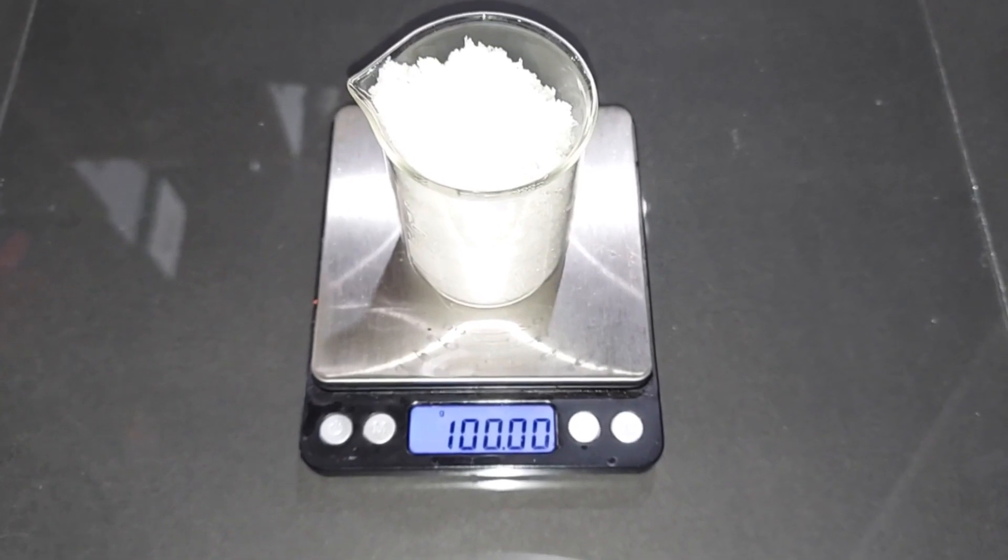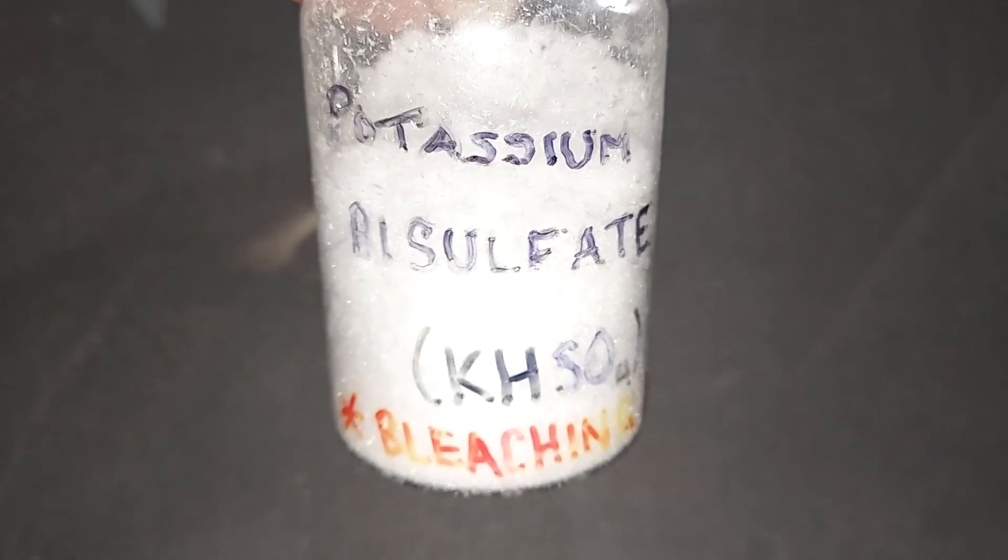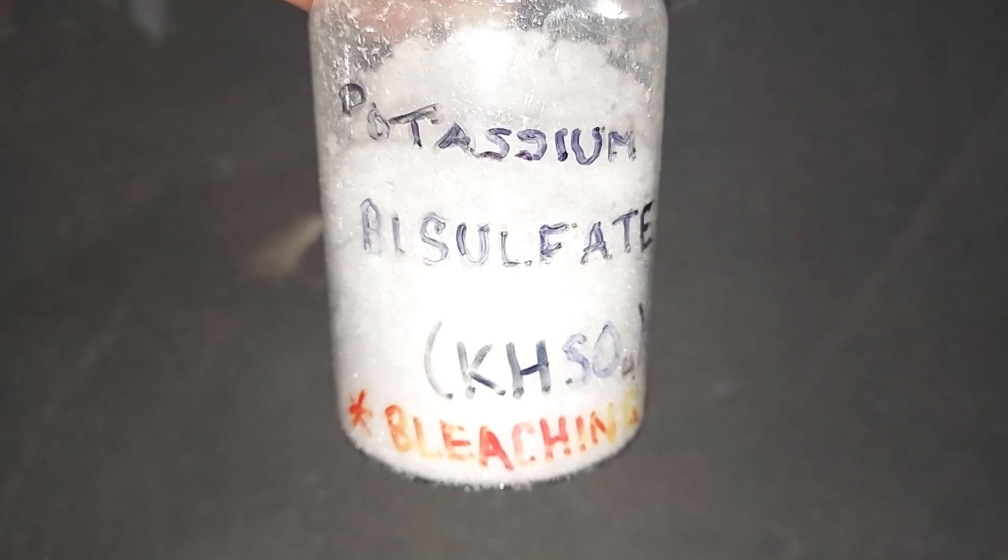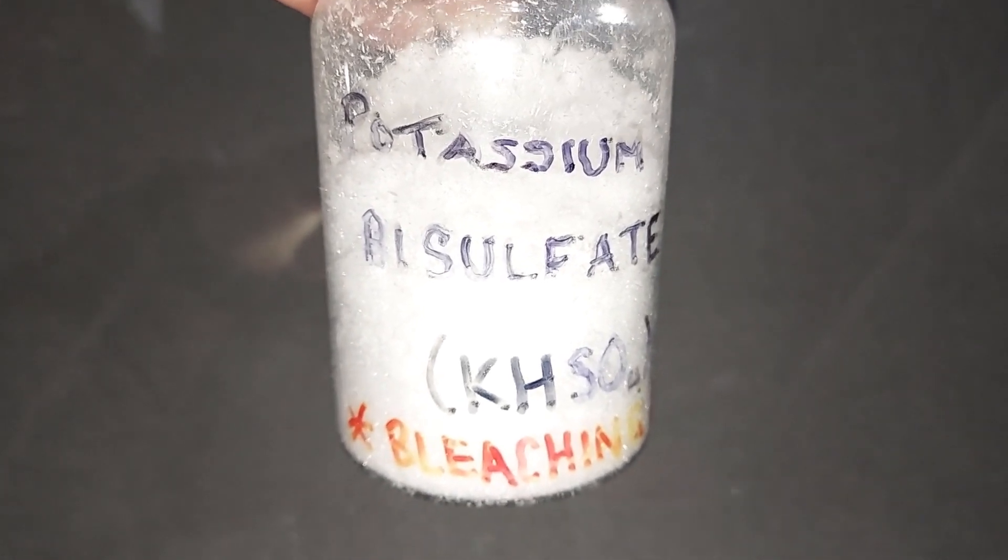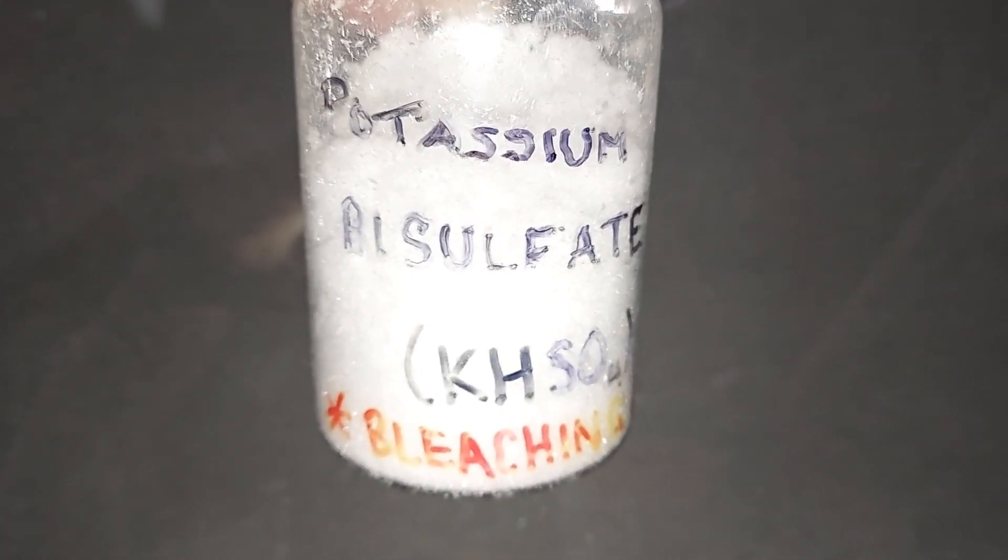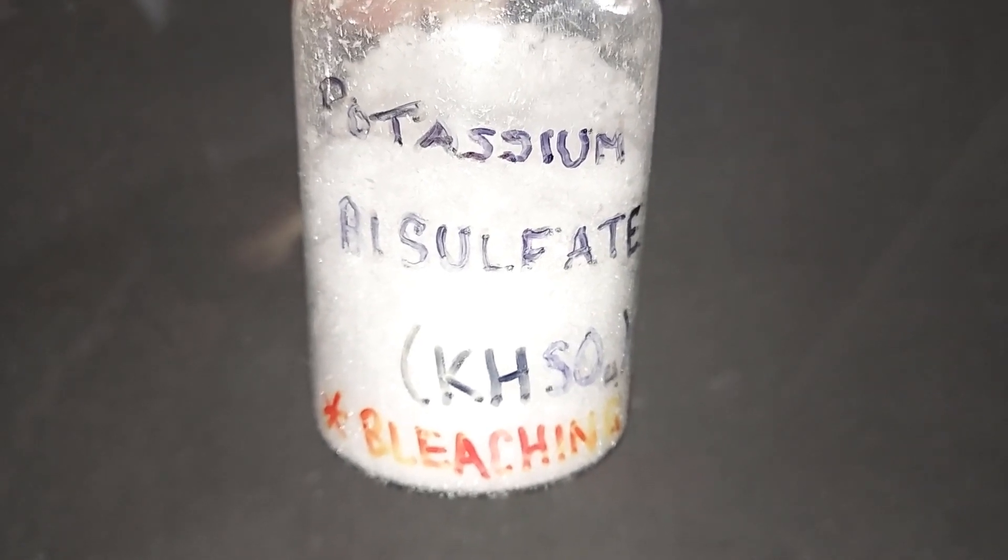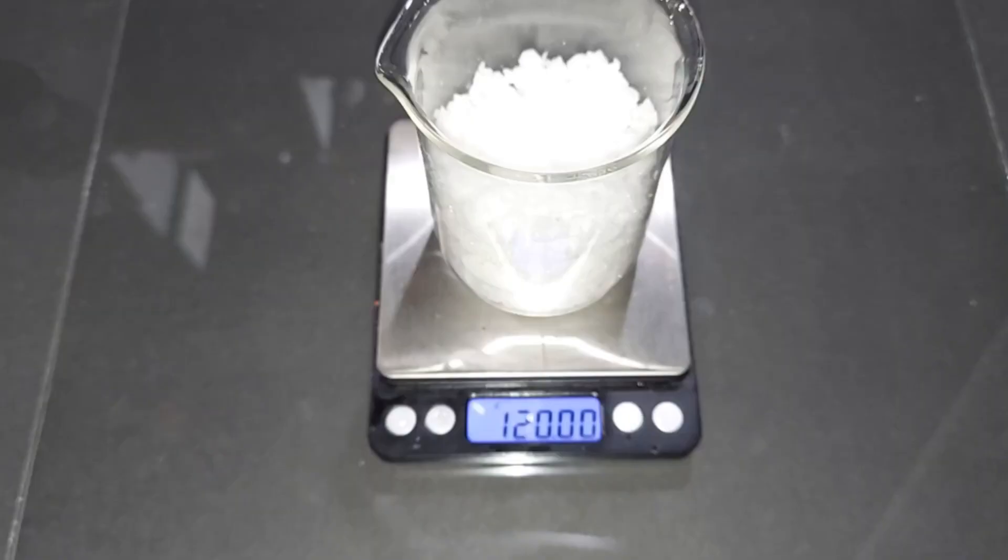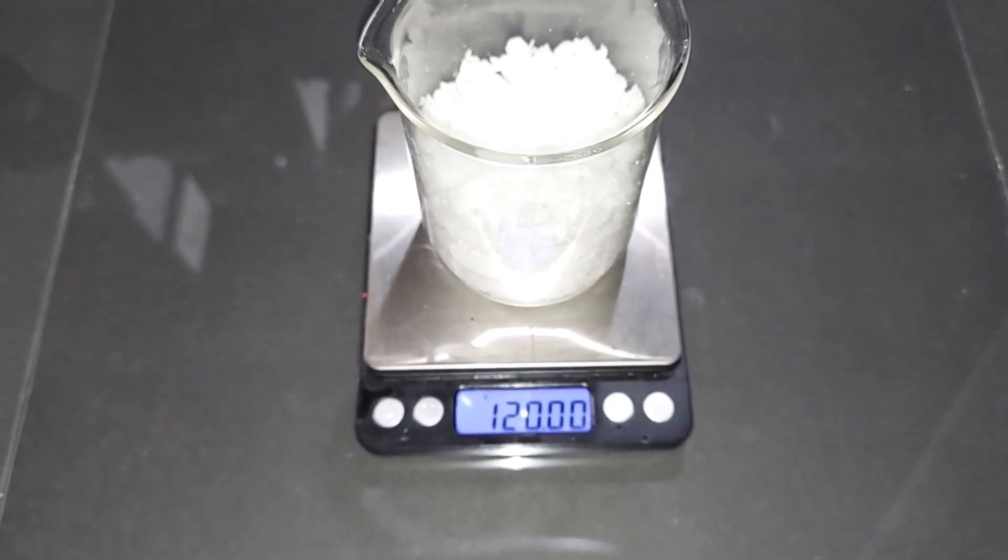100 grams of ammonium persulfate pre-weighed. This is the potassium bisulfate I'm going to be using. It came from making nitric acid around two years ago, and I saved it, of course. That's the reason you should save your chemicals, even if it's a leftover product. 120 grams of potassium bisulfate.